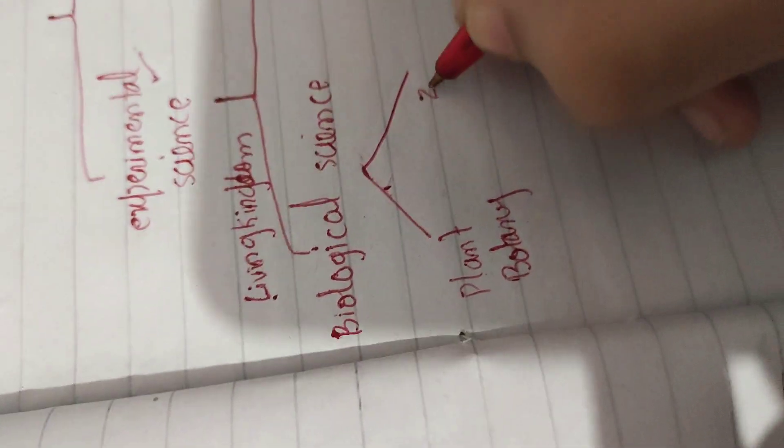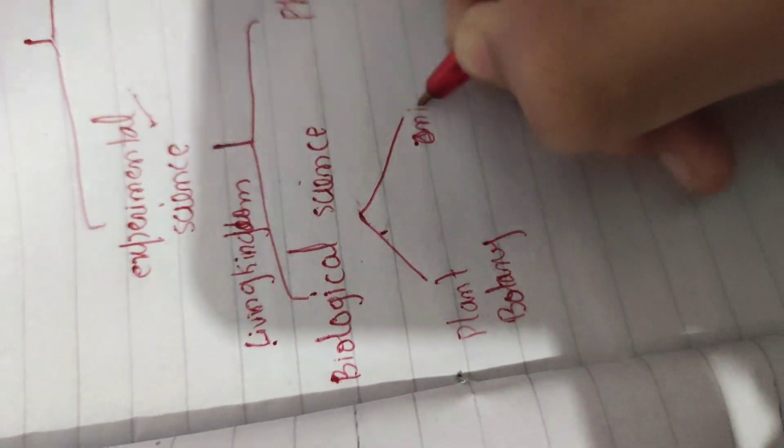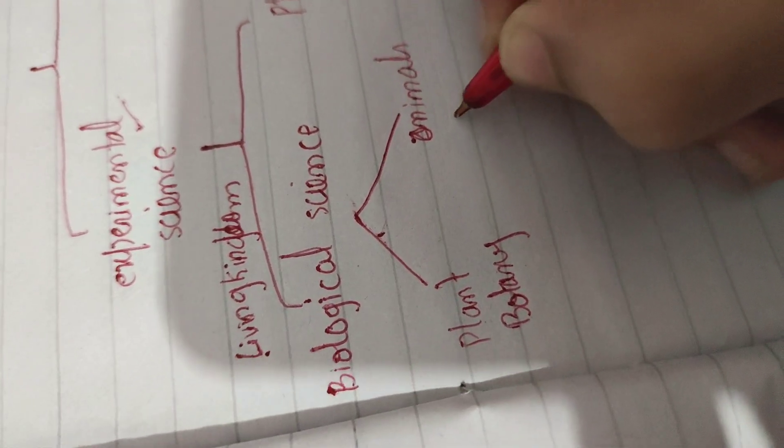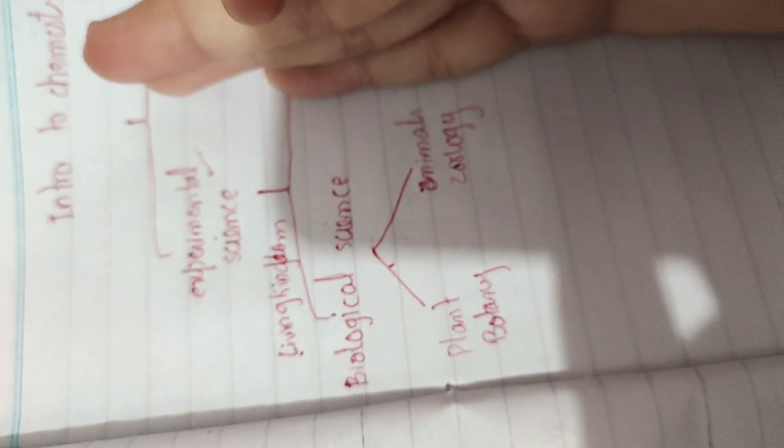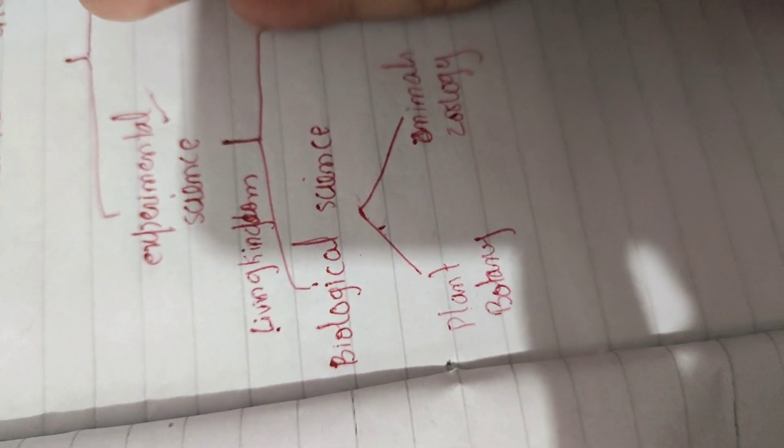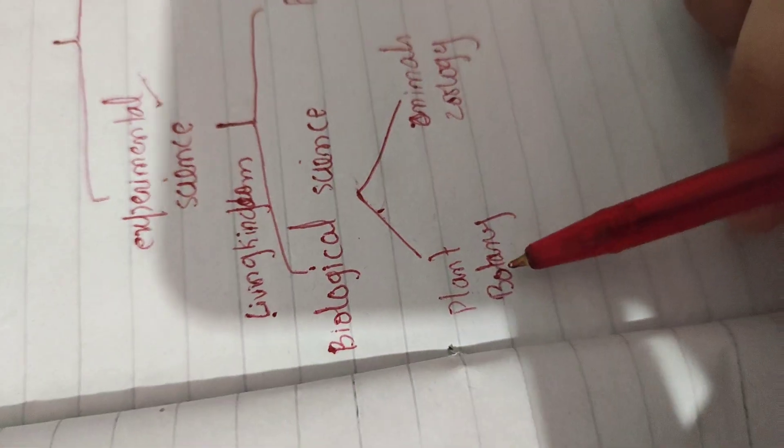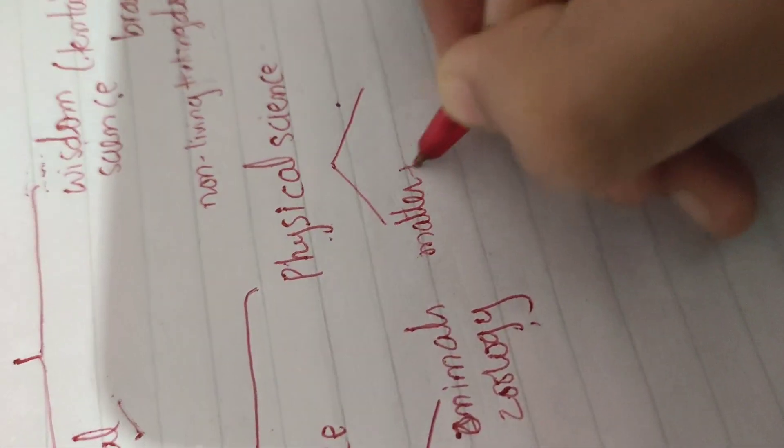And we have animals, so that comes in zoology. These sites which have the living kingdom and biological science have two main subjects: botany and zoology. That is biological science. Now we're going to have a look at non-living stuff. That is physical science. So physical science is mainly of matter plus its transformation.